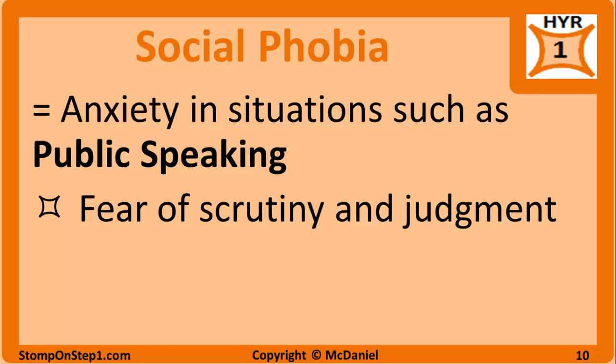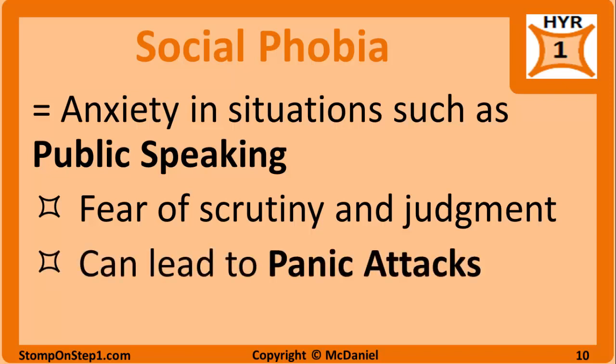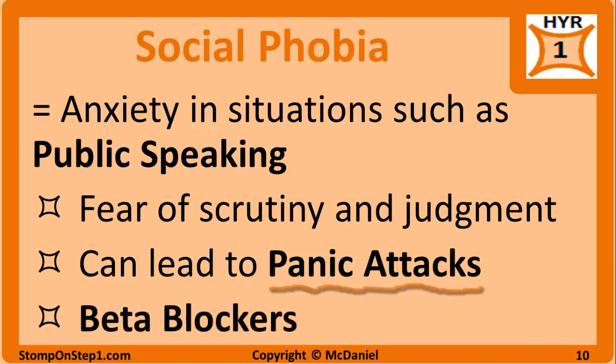Social anxiety disorder, also known as social phobia, is anxiety in social situations such as public speaking, eating in public, or using public restrooms. This usually includes an intense fear of scrutiny and judgment from others. These patients may be relatively asymptomatic if they can avoid being the center of attention. Social phobia can be thought of as a specific phobia where the fear is related to social situations; however, the two disorders are separate diagnoses in the DSM. In extreme cases, social anxiety disorder can lead to panic attacks. Beta blockers are sometimes used on an as-needed basis for performance anxiety or stage fright — given about 30 minutes before an event to block sympathetic signals. The patient still has anxiety, but because the physical symptoms are blunted, they may not realize they are anxious.